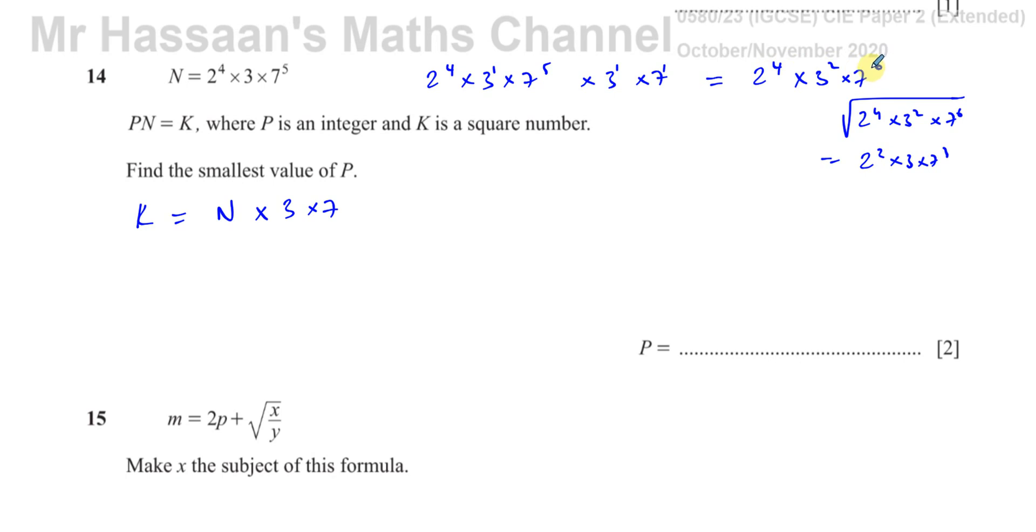They're multiples of 2, basically. If they're all multiples of 3, for example, then it would be a cube number.